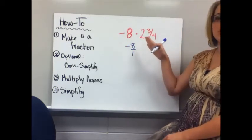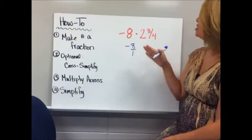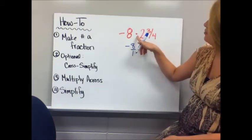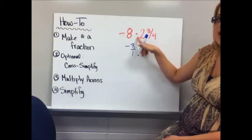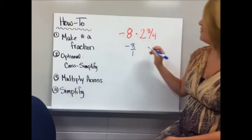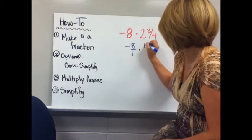With a mixed number, you're going to turn it into an improper fraction, which means you multiply the denominator times the whole number and then add the numerator. So 4 times 2 is 8, 8 plus 3 is 11.